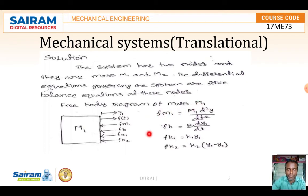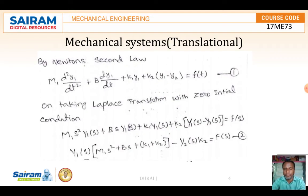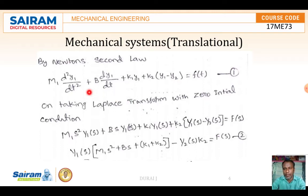With these values, the mass term gives a second-order differential equation, the damper gives a first-order term, and the spring gives a displacement term. According to Newton's second law — also referenced as D'Alembert's principle — the sum of all forces equals the sum of opposing forces.